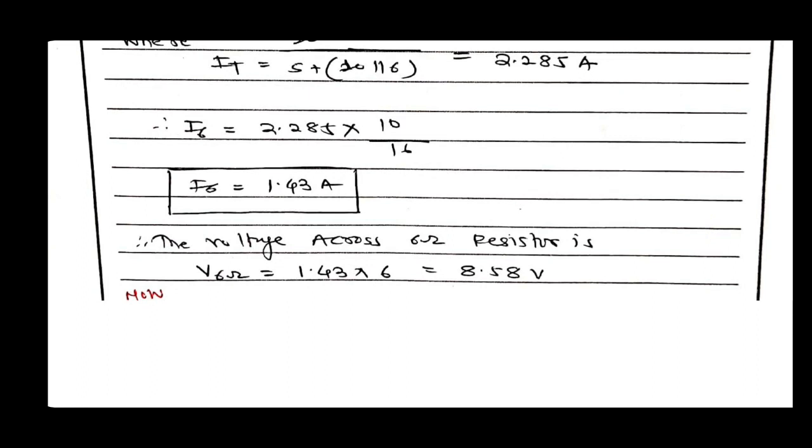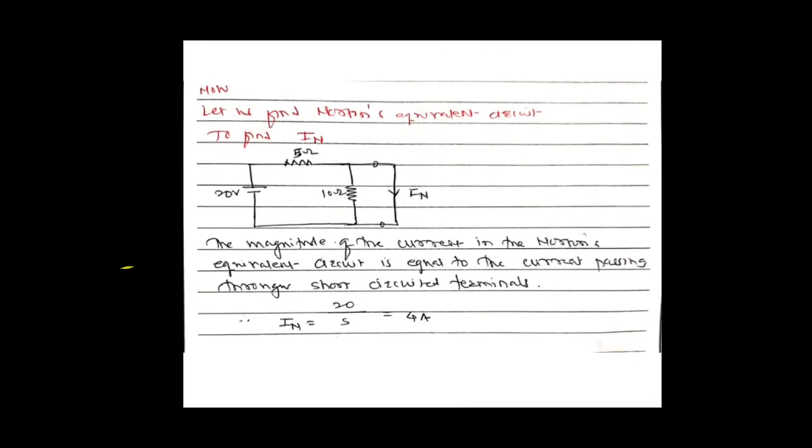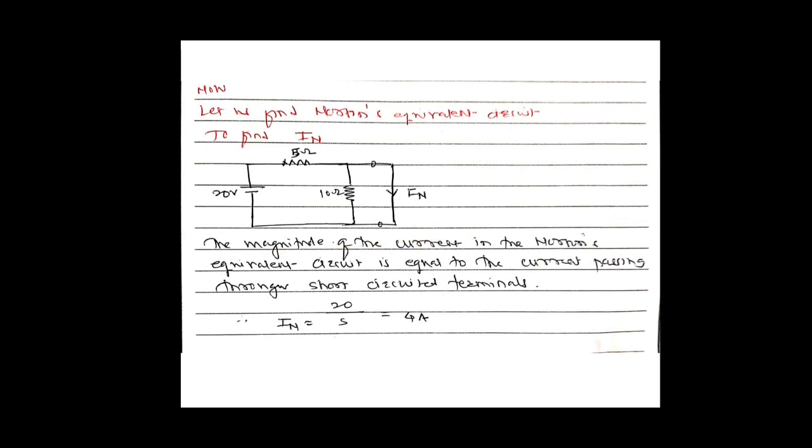We now draw the Norton equivalent circuit. From the statement of the Norton theorem, the equivalent circuit has one current source IN (Norton current) in parallel with the total equivalent resistance RN (Norton resistance). We need to find two things: the Norton current IN and the Norton resistance RN.